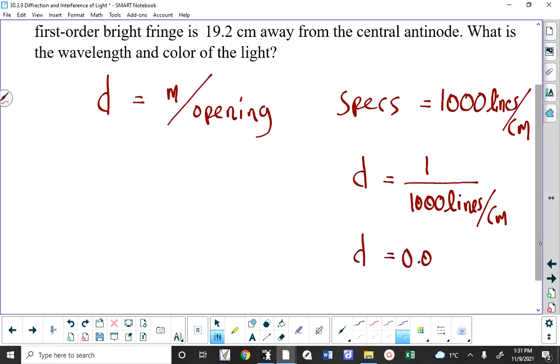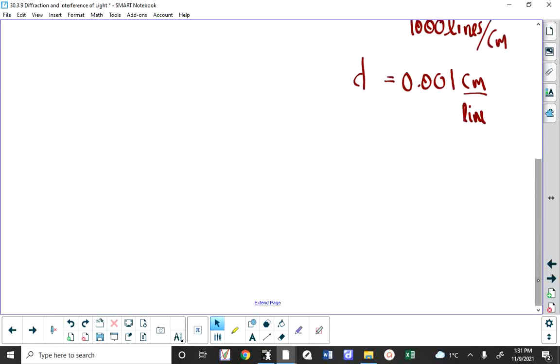So what do we get here? 0.001 centimeters per line. And we don't need to write per line. Once we've established that D has a certain value, we can then go just one step further and say that now we know D is 0.00001 meters.